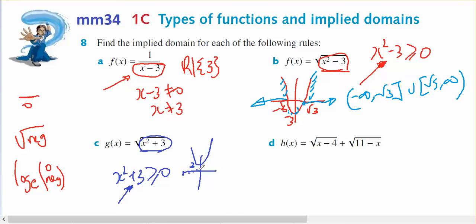So any value of x will give you x squared plus 3 bigger than zero, so therefore you can take the square root. So my domain is all real numbers.